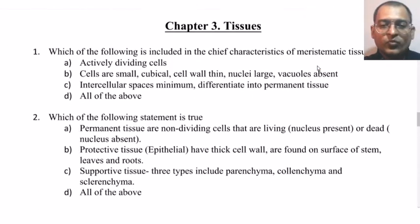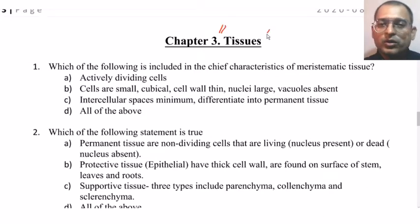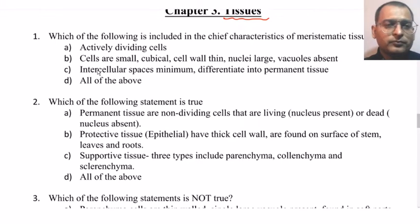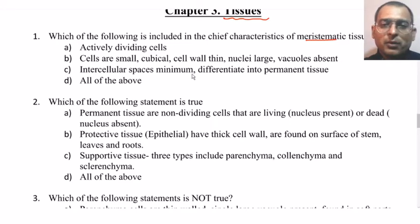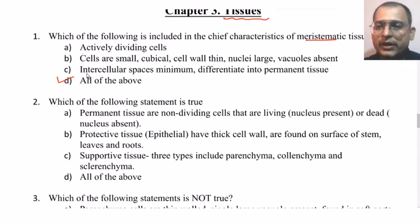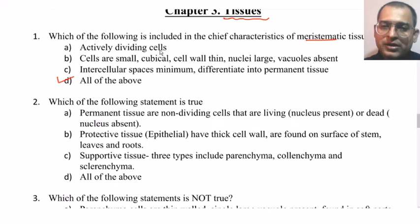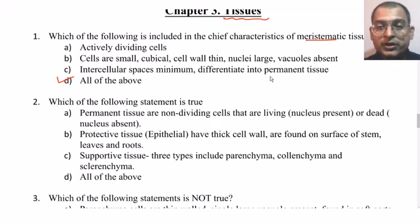Moving to Chapter 3 — Tissues. First question: which of the following is included in the chief characteristics of meristematic tissue? Actively dividing cells; cells are small, cubical, cell wall thin, nuclei large, vacuoles absent; intercellular spaces minimum, differentiate into permanent tissue — all of the above. All of the above are characteristics of meristematic tissue: actively dividing cells with a prominent nucleus, absent vacuoles, minimum intercellular space, and they differentiate into permanent tissue.